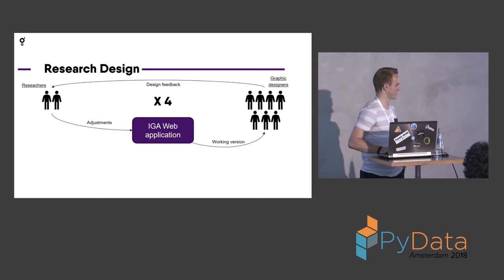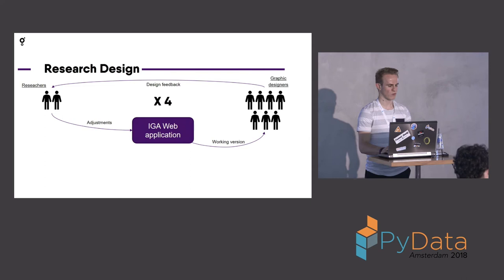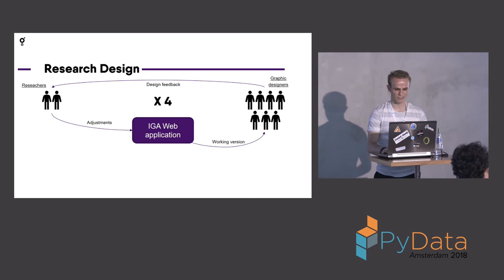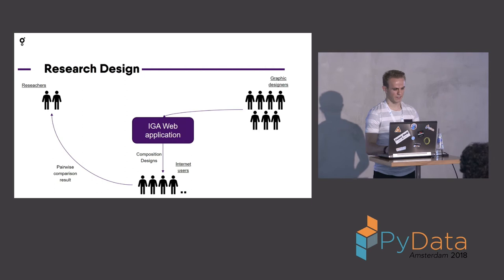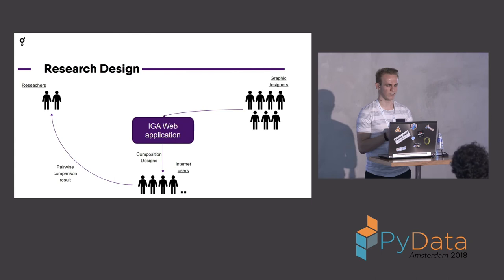We made a web application. Designers use it, they give their feedback, and we did this loop four times. They could criticize the compositions that we made using our genetic algorithm, give feedback, and we improved the product four times. Then in the end, we did a pairwise comparison research in which five pairs of compositions are shown. One of each pair is a computer-aided design and the other is made by a designer.